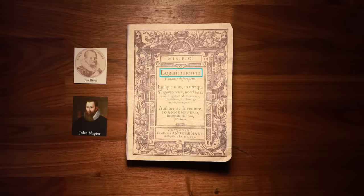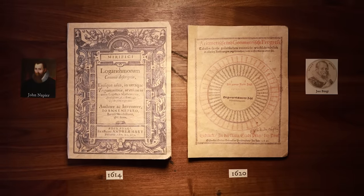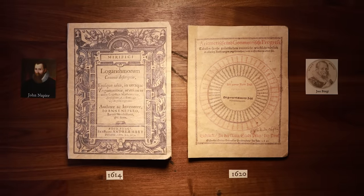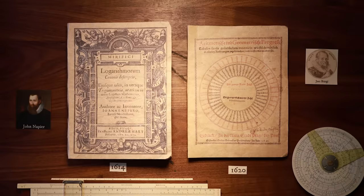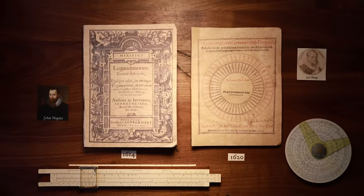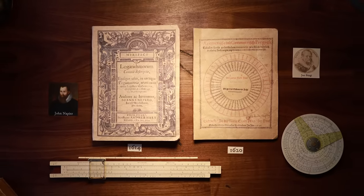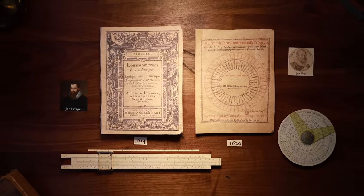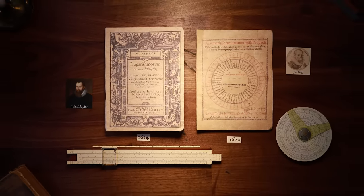Napier called his discovery logarithms. His approach and name quickly caught on, and today we call the red numbers in Berge's table the logarithms of the black numbers. For the next 350 years, until the popularization of the electronic calculator in the 1970s, tables of logarithms and the slide rule were the primary tools used for all mathematical computation.